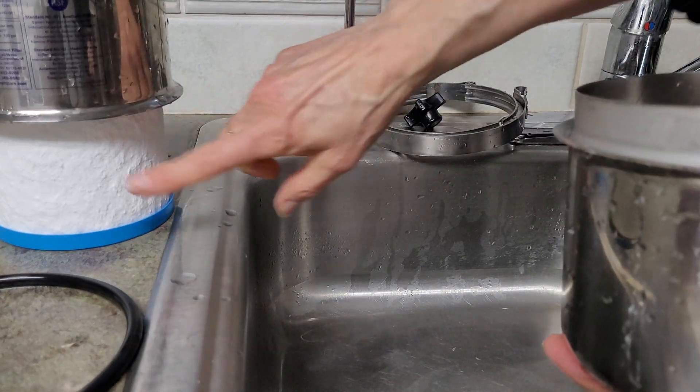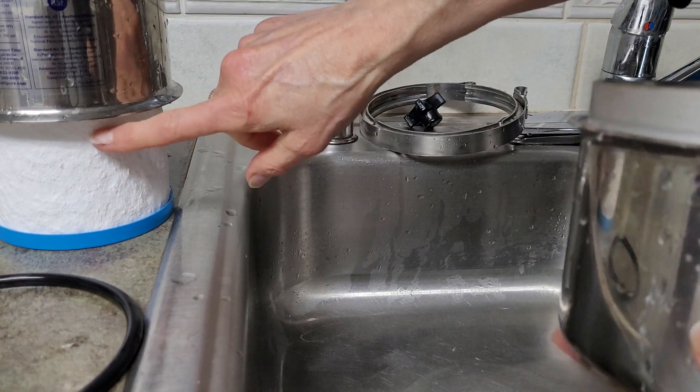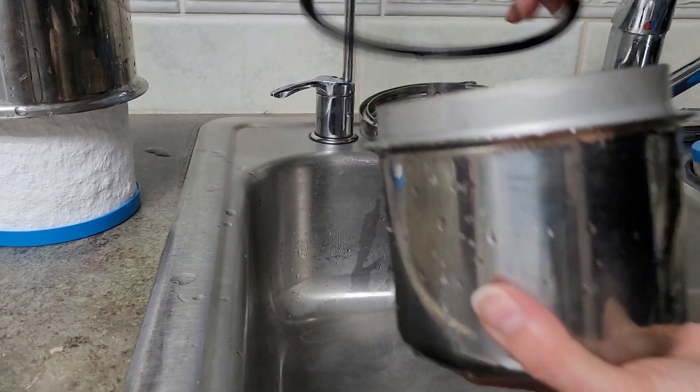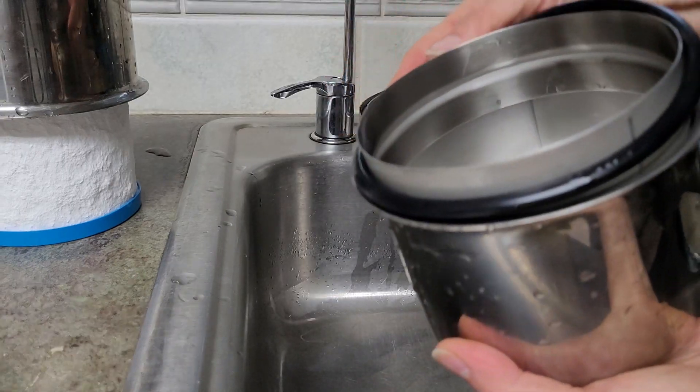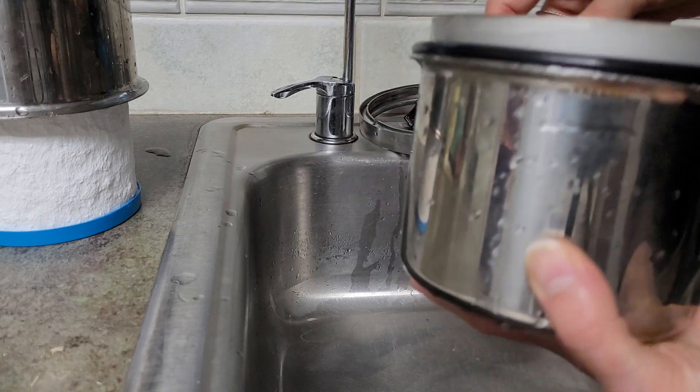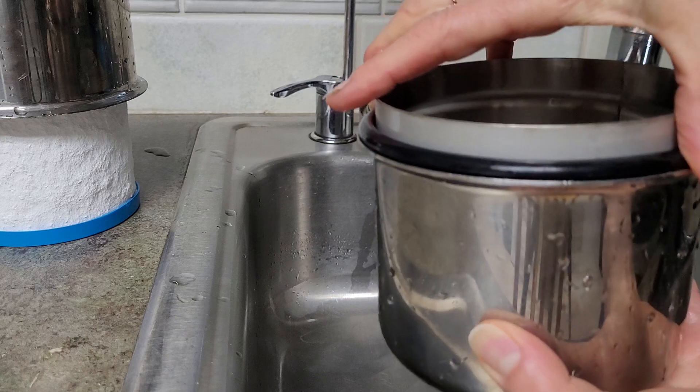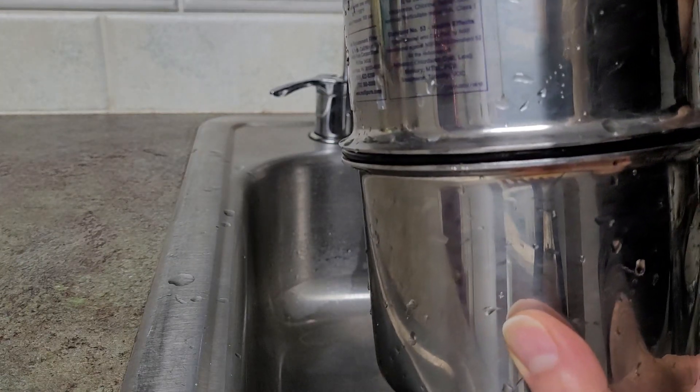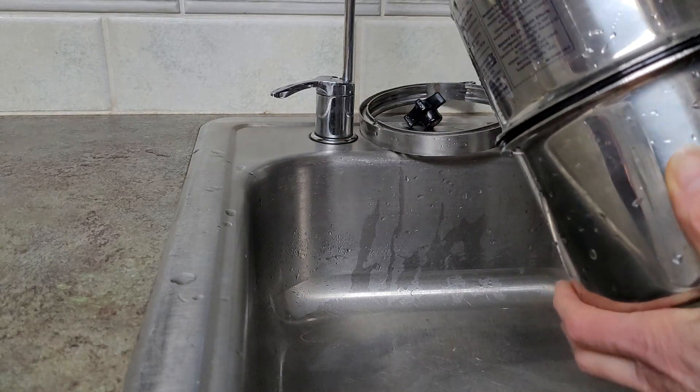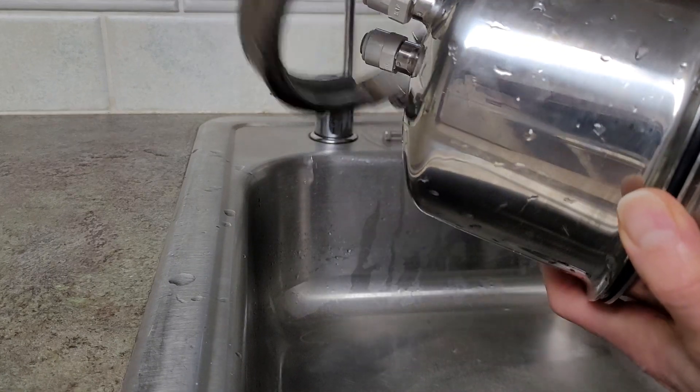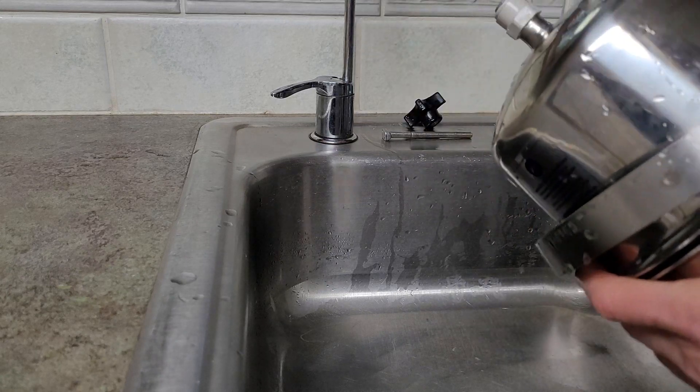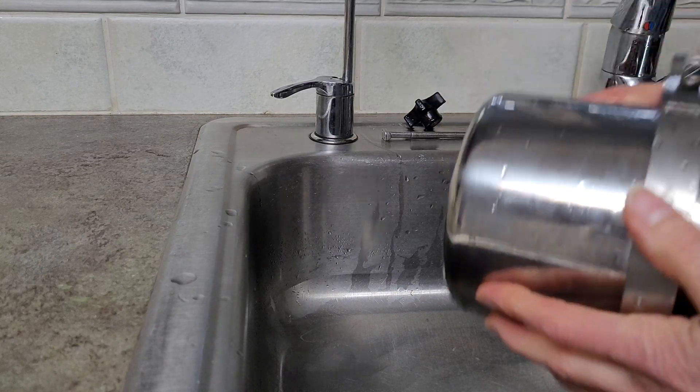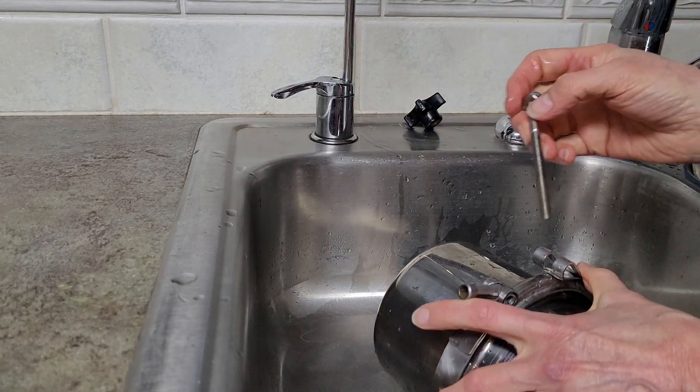We've got the filter screwed in just hand-tight, not cranked, into the top of the housing unit. Now we want to replace the o-ring onto the bottom half, so just go all the way around and make sure that the o-ring is seated into the little channel. Now we take the top half and just set it into the bottom half. We take our band and put that around so that it fits around the halves.